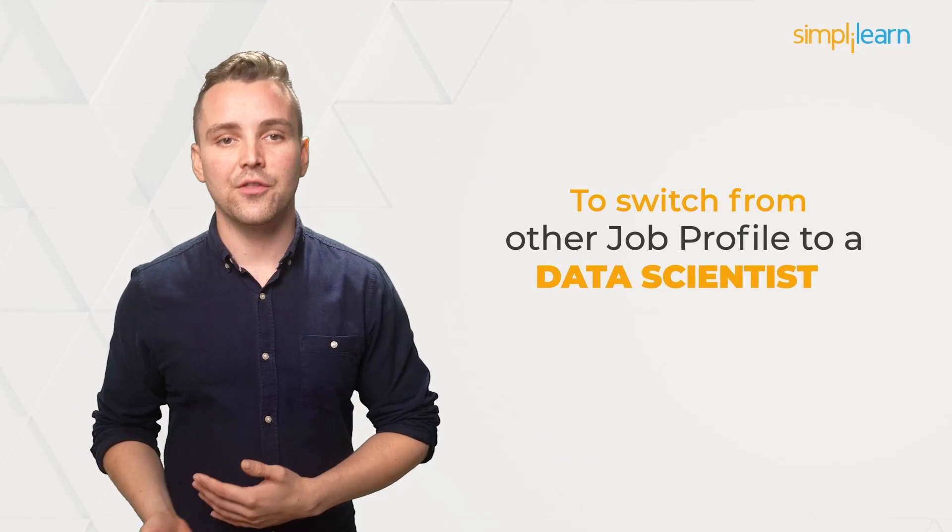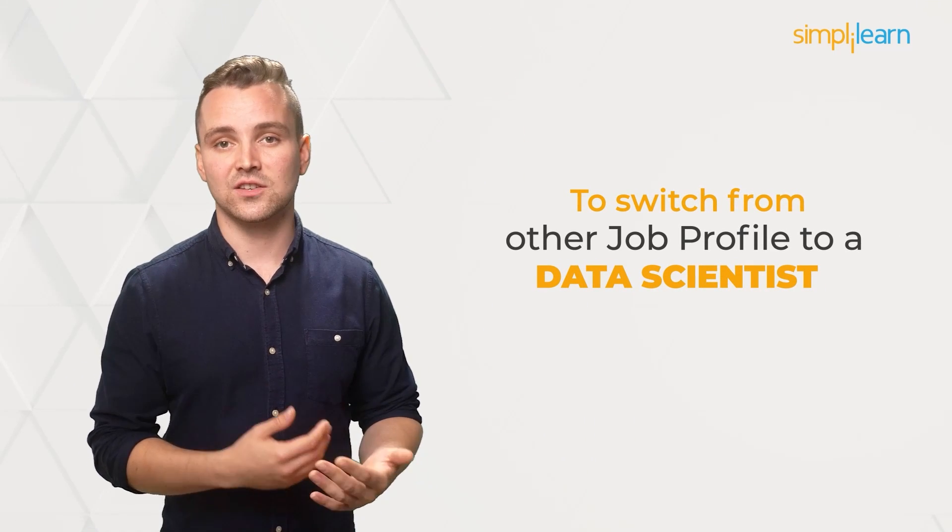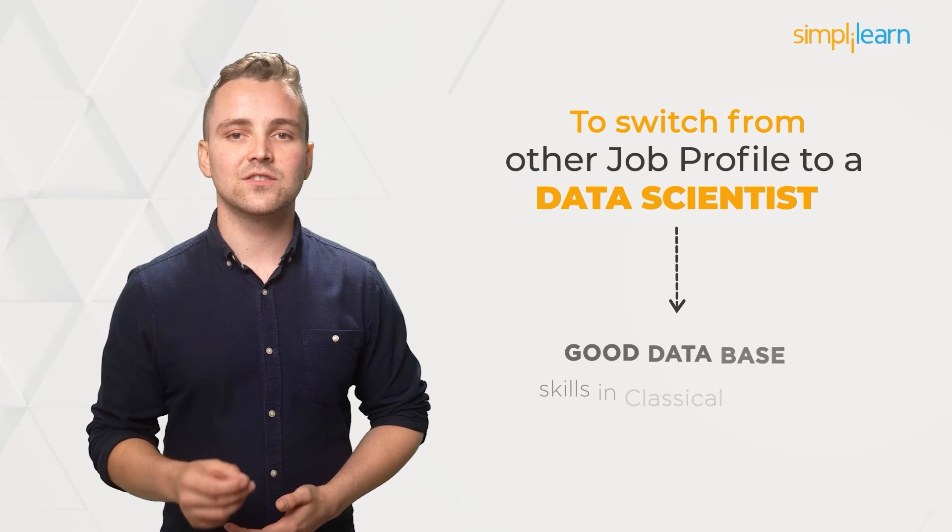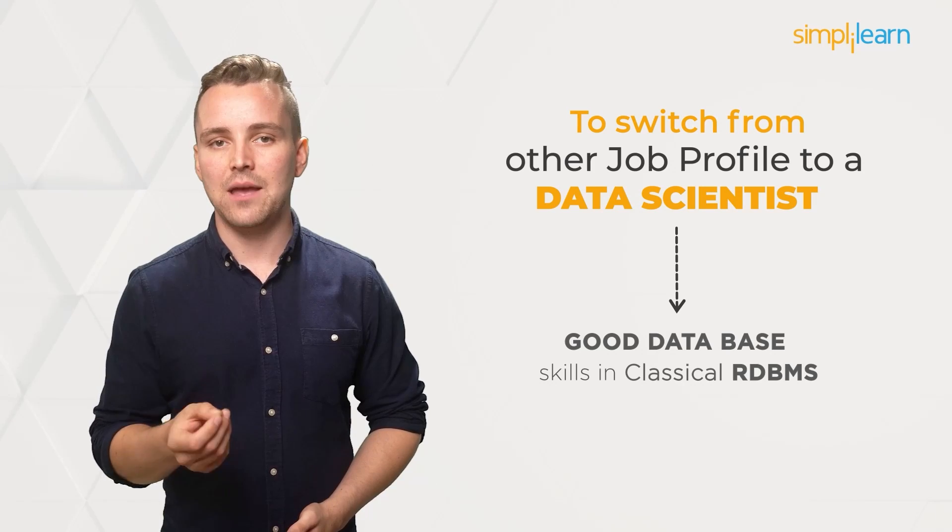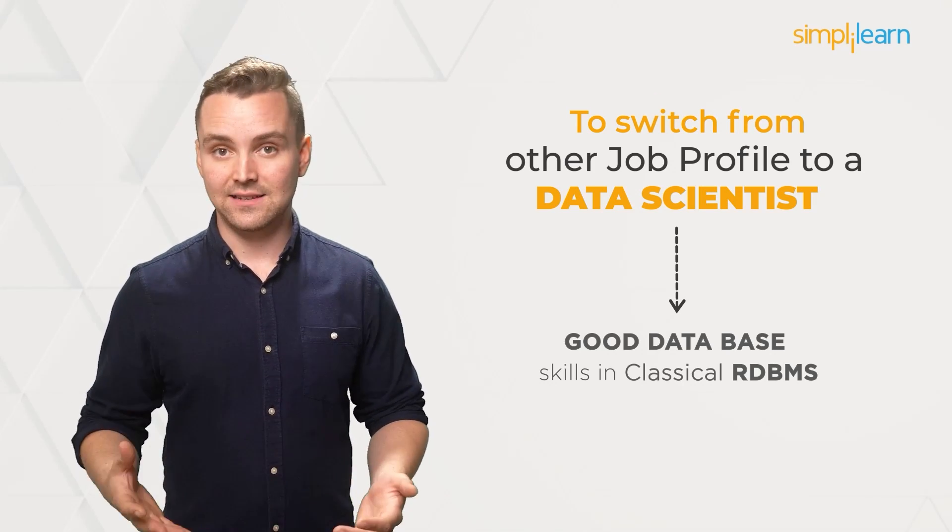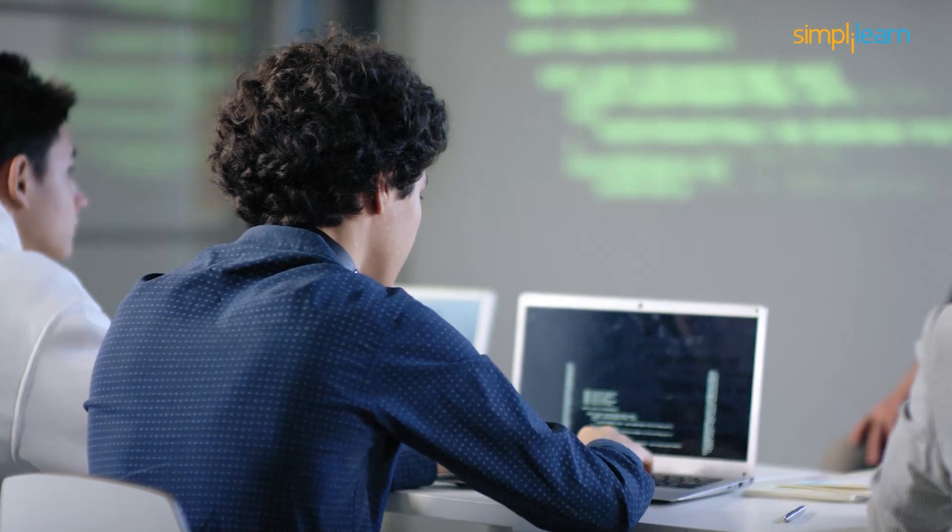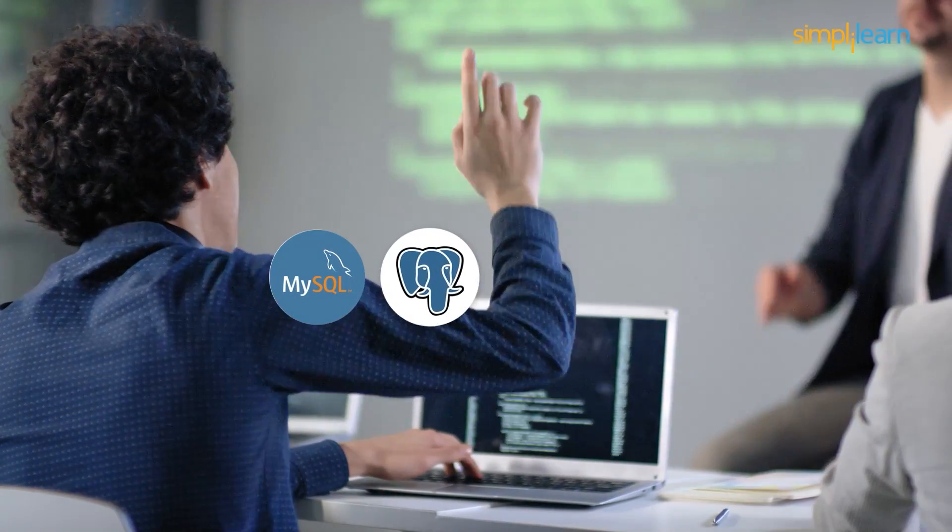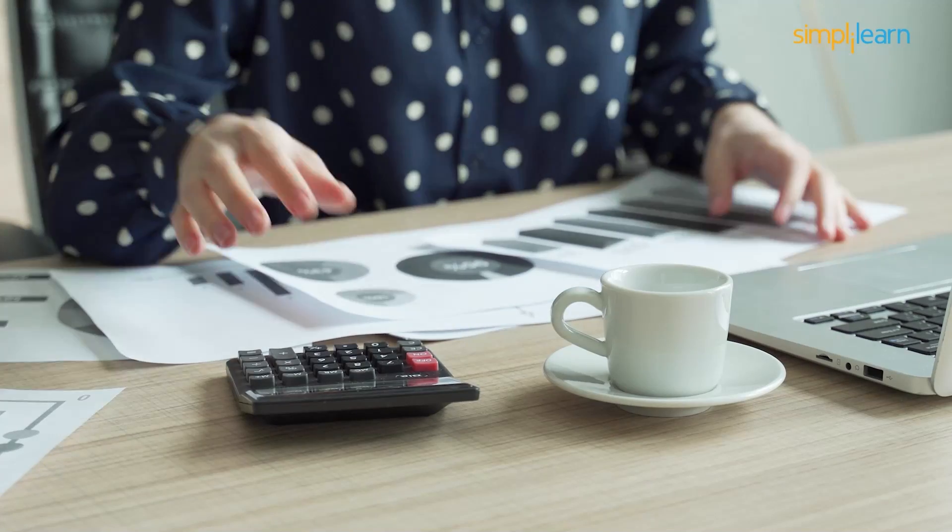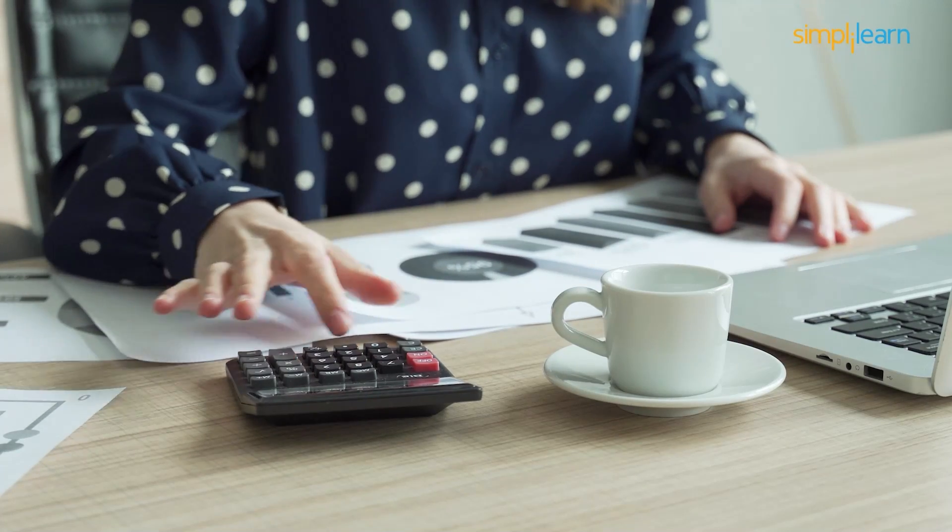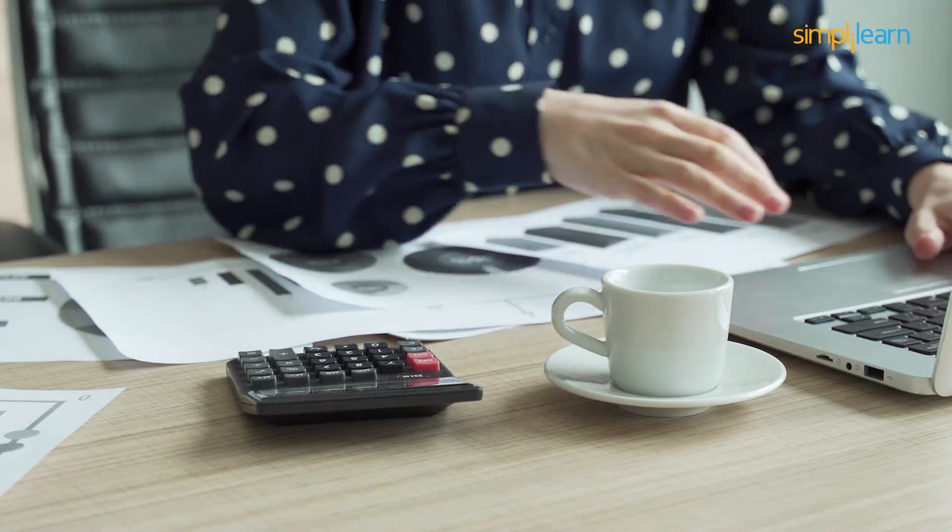To switch from some other job profile to the data scientist profile, you must possess some good database skills in any classical RDBMS, including at least SQL programming. For example, MySQL, PostgreSQL, Oracle, and SQL Server. You need to understand how to use your mathematical background to address actual business difficulties.